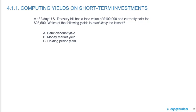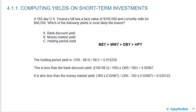A 182-day U.S. Treasury bill has a face value of 100,000 and sells for 98,500 at a discount. Which of the following yields is most likely the lowest: bank discount yield, money market yield, or holding period yield? The correct answer is C — the holding period yield. If you follow and memorize the rule — bond equivalent yield > money market yield > bank discount yield > holding period yield — you can answer this question without doing any math.